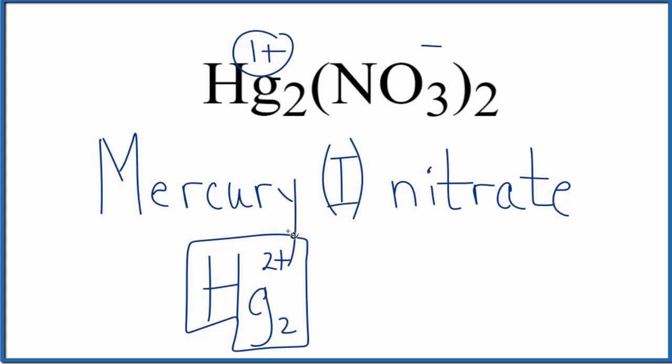So when you hear mercury one cation, the mercury one ion, it's Hg2 two plus. Kind of a strange one. Either way, the name for Hg2(NO3)2 is mercury one nitrate.